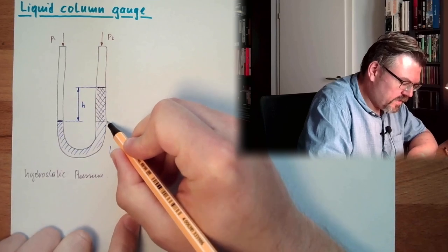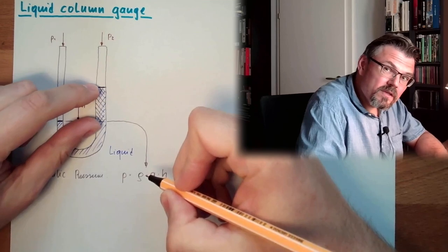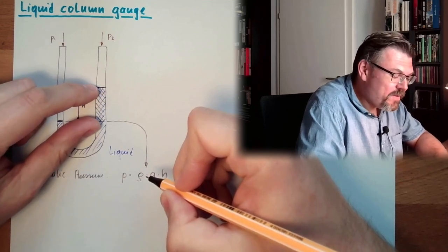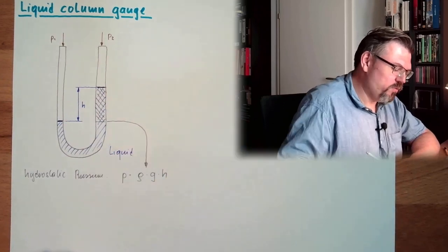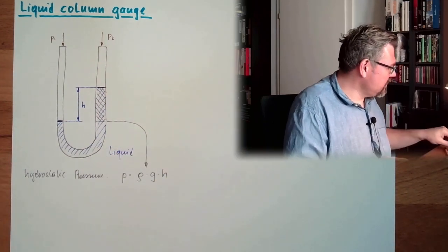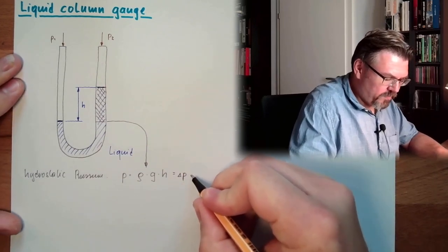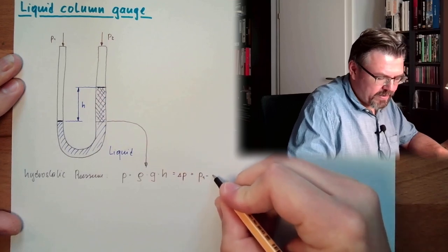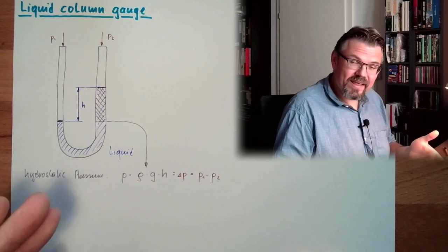The hydrostatic pressure of this liquid column is exactly balancing the pressure difference between those two. So this is actually delta p. And this is p1 minus p2. Okay? That's it.